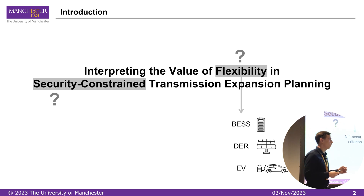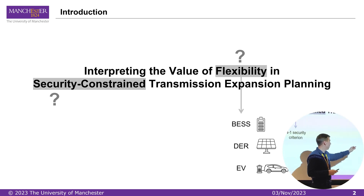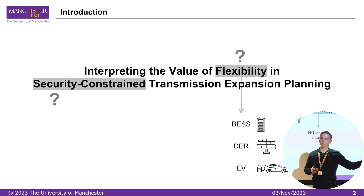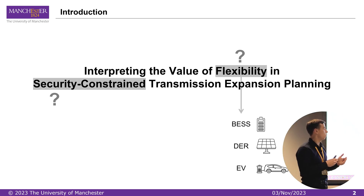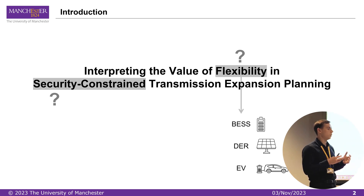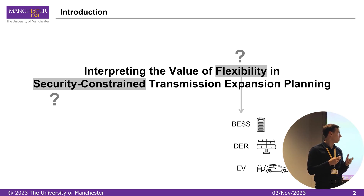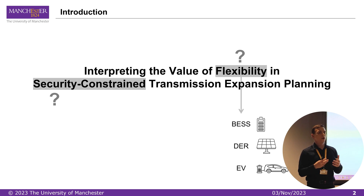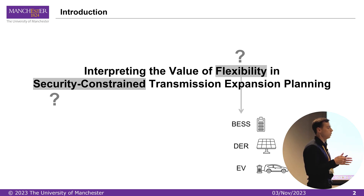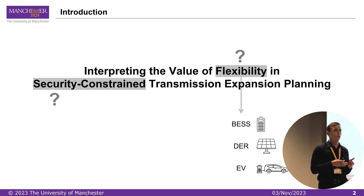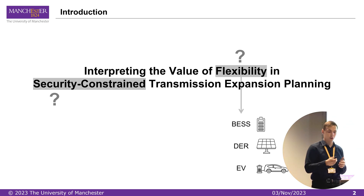Some examples of this technology: battery energy storage systems, distributed energy sources, electric vehicles, and other demand response programs that can shift their demand over time. Such flexible devices are considered valuable for power systems because they can produce some system-level services, for example for energy balancing. In this particular work, we want to estimate the value of these services for the transmission expansion planning task.